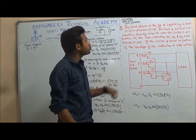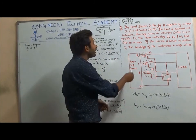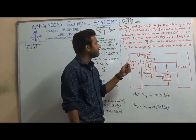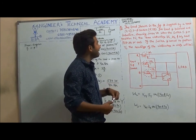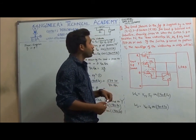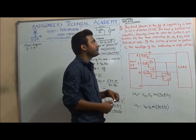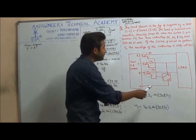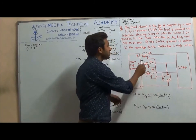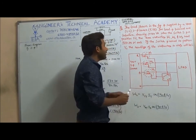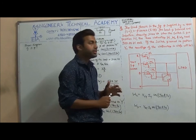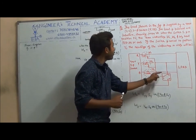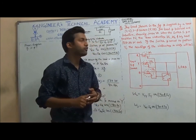The load shown in the figure is supplied by a 400 volt line-to-line 3-phase source. RYB is the sequence given here. The load is balanced and inductive, drawing 3464 volt amperes. When the switch S is in the position N, the 3 watt meters W1, W2, and W3 read 577.35 watts each. If the switch is moved to position Y, the reading of the watt meter in watts will be?